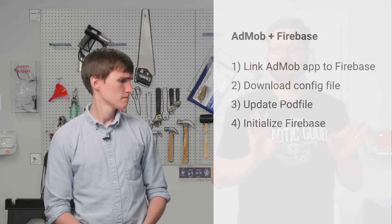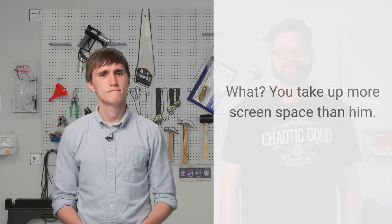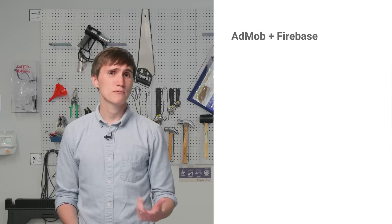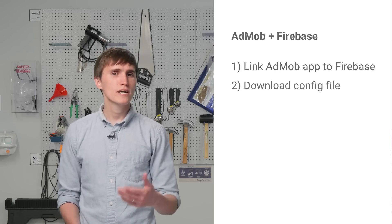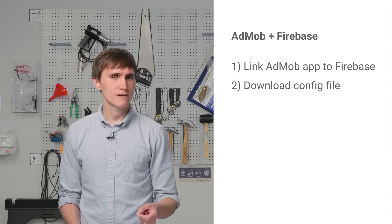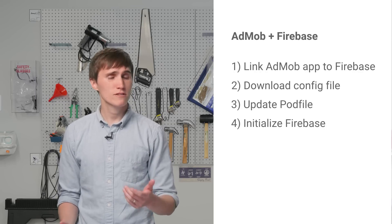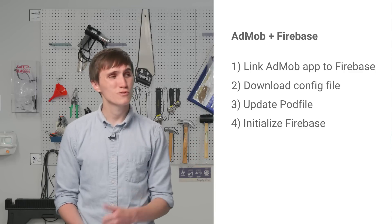Looks right to me. Excellent. So up next is iOS. To get an iOS app up and running with AdMob and Firebase, first you link the app to a Firebase project, then you download a configuration PLIST file, next you update your pod file to reference the Firebase pods, and then initialize Firebase in your app. Thanks — I'll let you do the screencast, though.